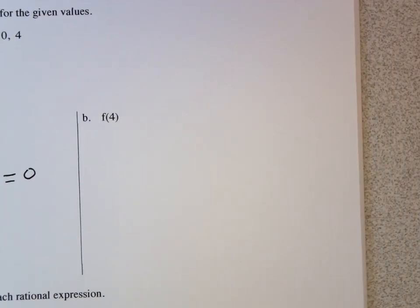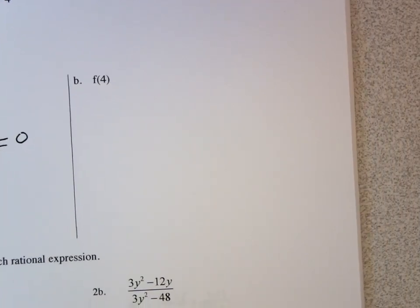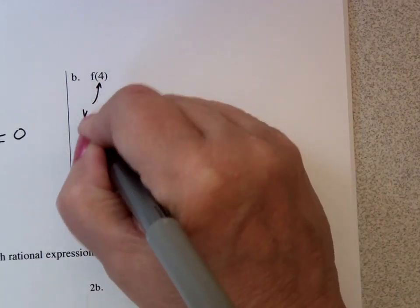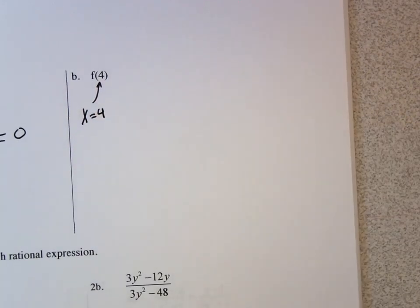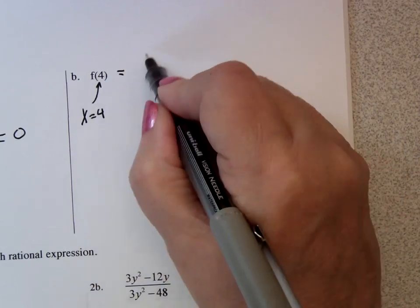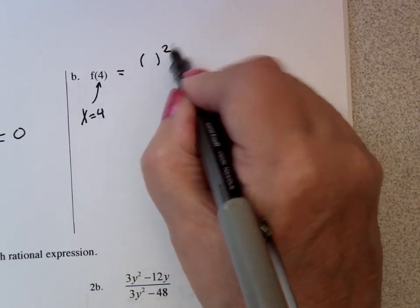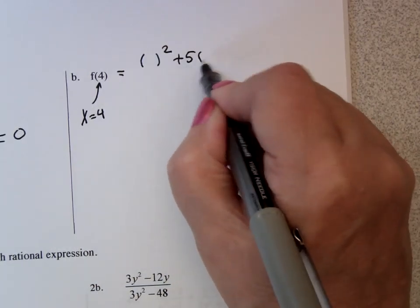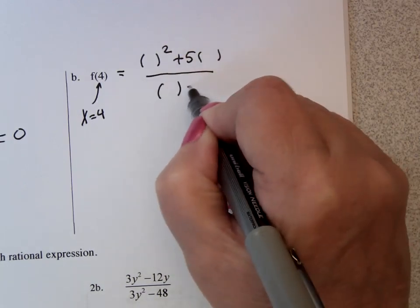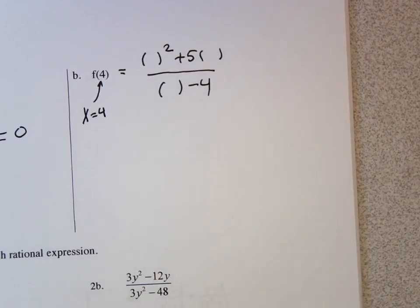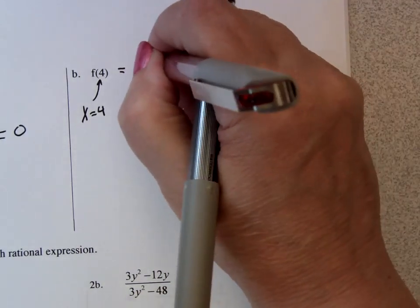This one says in the rule named f, we're going to replace x by 4. So this would be x squared plus 5x over x minus 4. We're going to replace all of the x's by 4.